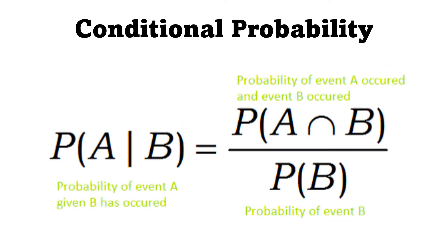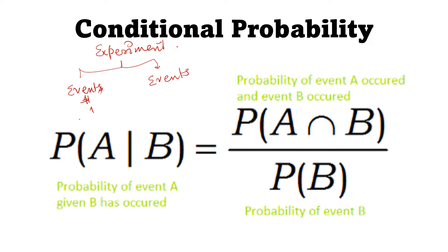The first thing is: what is conditional probability? Whenever in a question they are talking about some experiment, two events are involved, and one of the events has already occurred. They are asking you to find the probability of the second event.